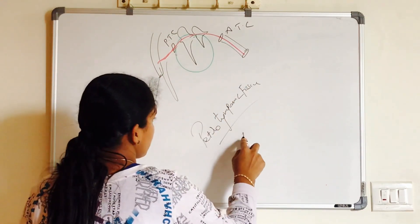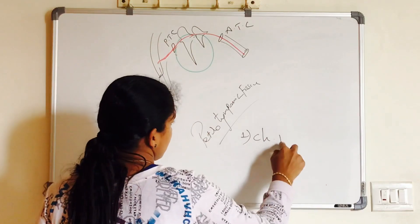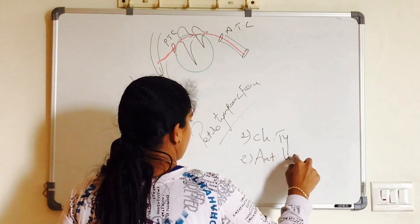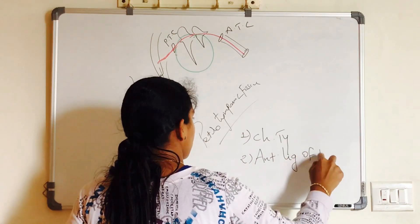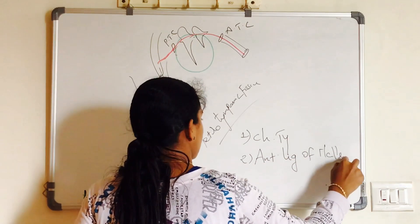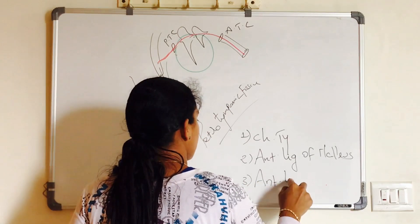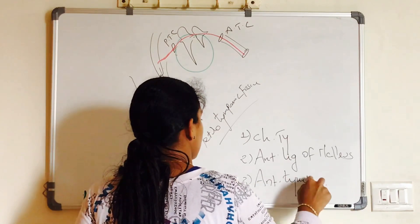Just remember, along with your chorda tympani nerve, anterior ligament of malleus and anterior tympanic branch of maxillary artery also emerges out of your petrotympanic fissure.